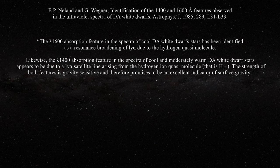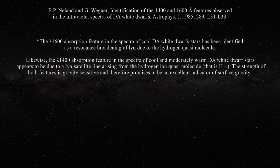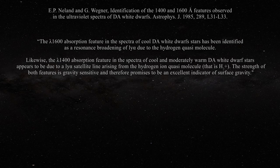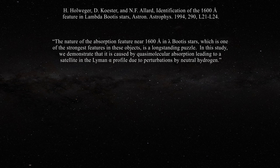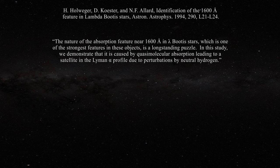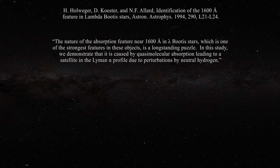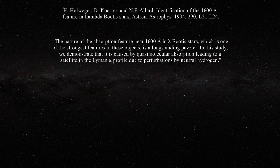Still, the authors do claim that this can be linked to surface gravity, but can we prove this wrong as well? The problem is that the 1600 angstrom feature is also seen in Lambda Boötis stars, which have a surface gravity similar to the Sun. In a paper published nearly ten years later, the authors write: the nature of the absorption feature near 1600 angstroms in Lambda Boötis stars, which is one of the strongest features in these objects, is a long-standing puzzle. In this study, we demonstrate that it is caused by quasi-molecular absorption leading to a satellite in the Lyman alpha profile due to perturbations by neutral hydrogen.